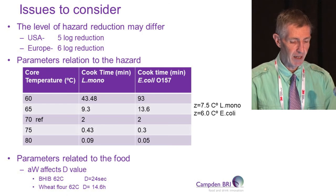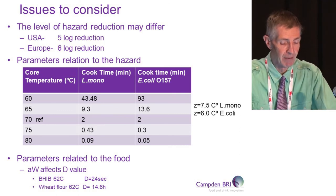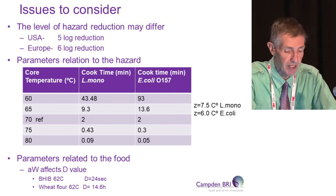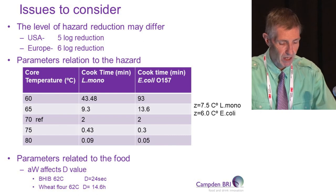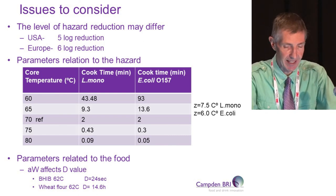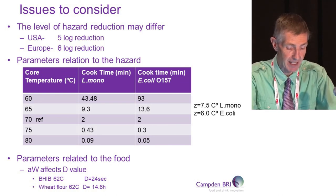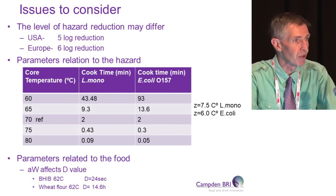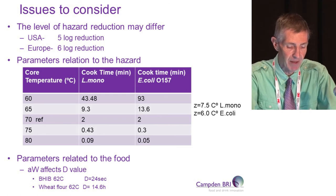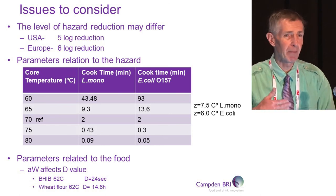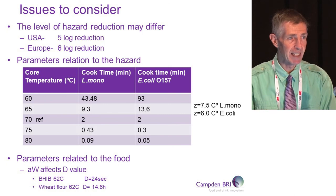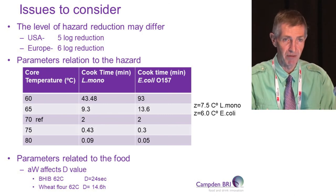You need an understanding of the parameters that relate to the hazard so you can design the right process to achieve the level of reduction needed. When looking at parameters related to the food, pH and water activity may also need to be considered. For example, the D value for Salmonella in brain heart infusion broth at 62°C is about 24 seconds, but in a low water activity product like wheat flour the D value might be around 14 hours. So you need to know something about both the product parameters and the hazard parameters before setting these processes.